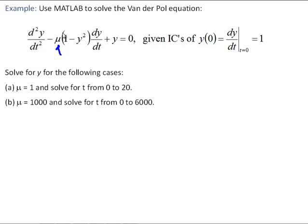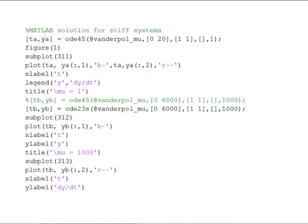And what we'll see is that for mu equals 1, this is a nonlinear differential equation that we can solve using pretty much any method. For mu equals 1000, this actually becomes stiff. When we write this as a system of two ODEs, this is a stiff ODE for mu equals 1000. So let's look at some MATLAB code to solve this.